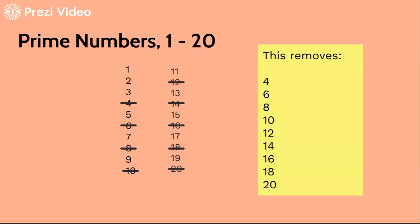So now from our list we can remove 4, 6, 8, 10, 12, 14, 16, 18 and 20, as you can see they're removed there.